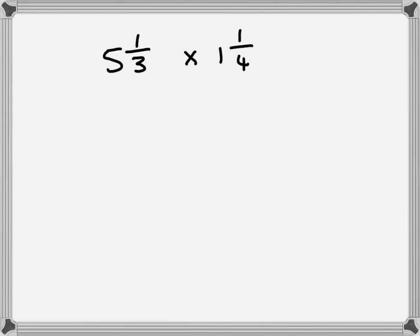Let's look at the next one. Let's convert our mixed numbers into improper fractions first. That's going to be 15 plus 1, 16. 4 plus 1, 5.